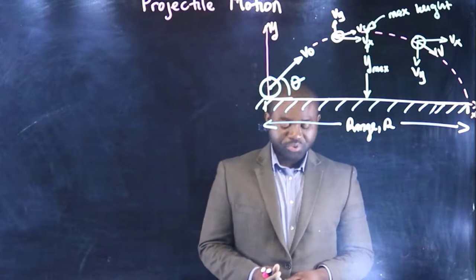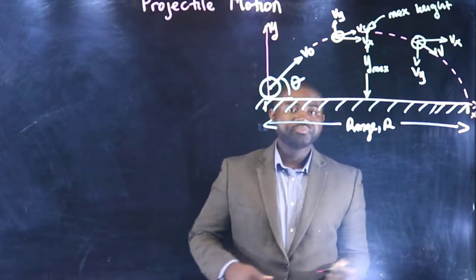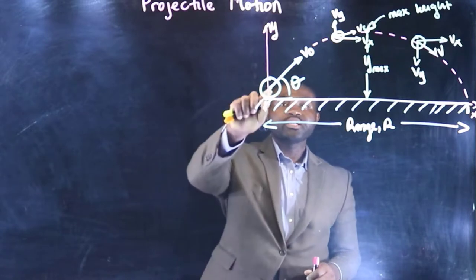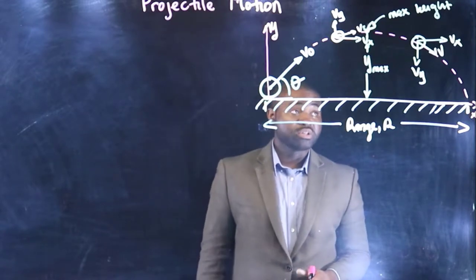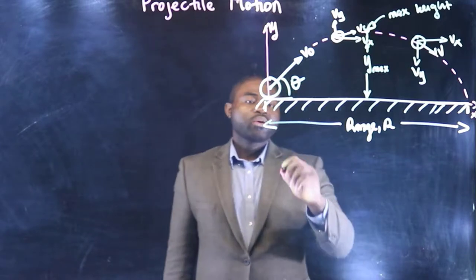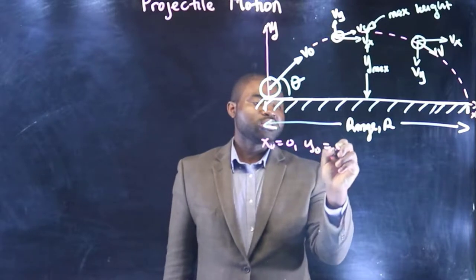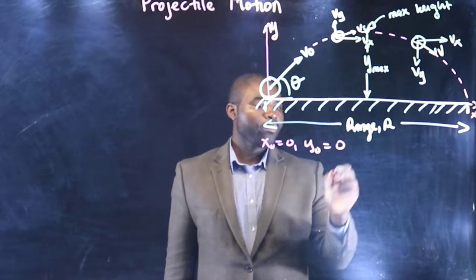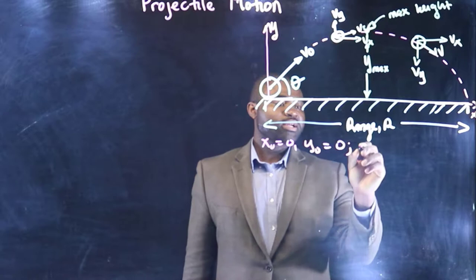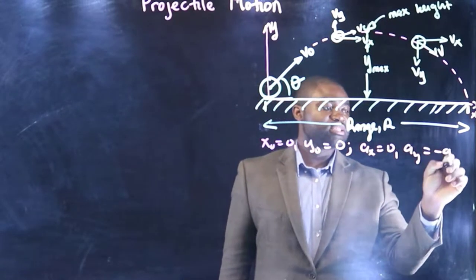Just to recap the main point, you could go back and review the previous video. We know that the origin is where the projectile is launched. So, x naught is 0, y naught is 0. We know that ax is 0, ay is negative g.